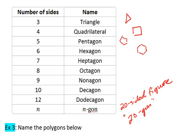Hexagon, hex is 6. Heptagon, hept is 7. Octagon, oct is 8, like octopus. And then we see the same with nonagon, decagon, and dodecagon.